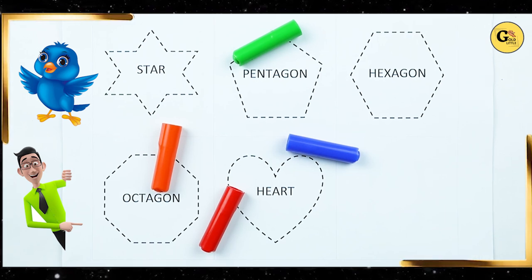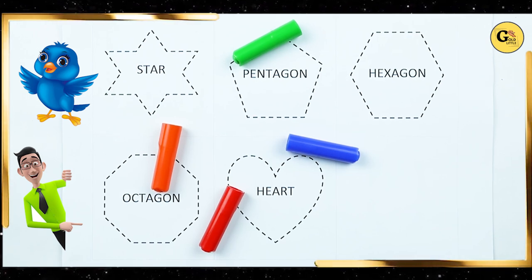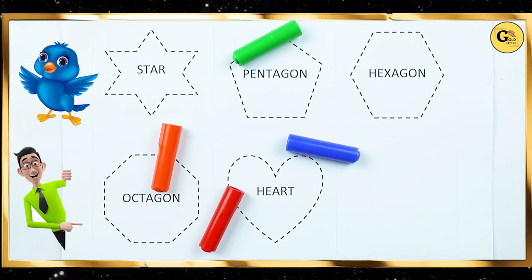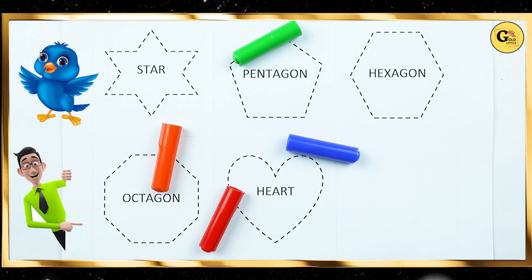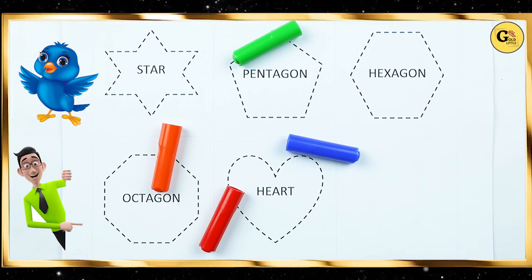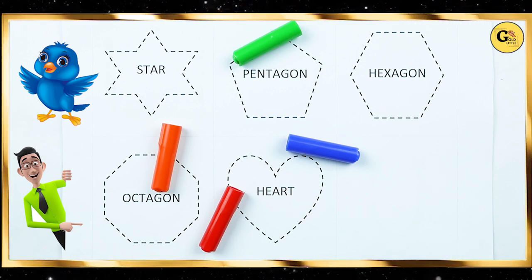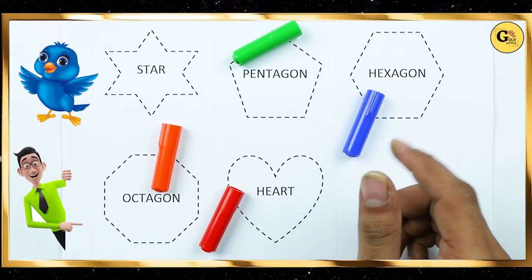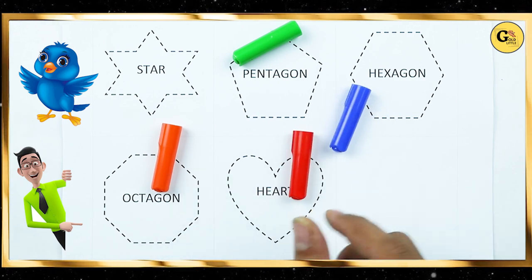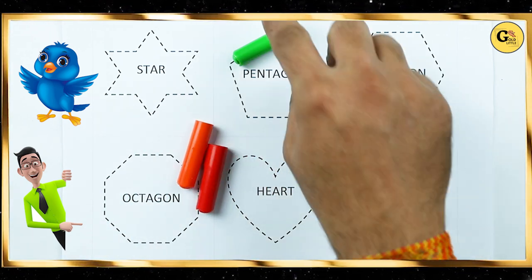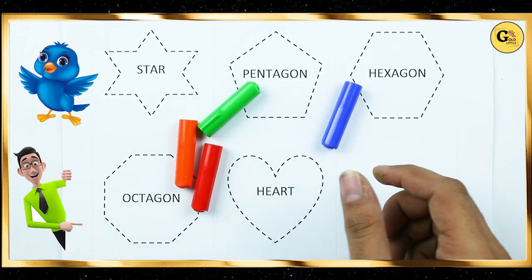Hello friends, today we learn shapes: star, pentagon, hexagon, octagon and heart with colors. Blue color, orange color, red color, green color.